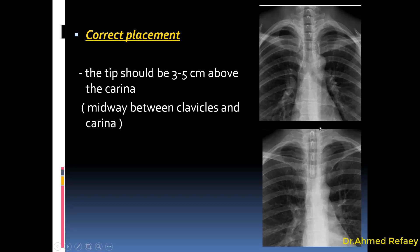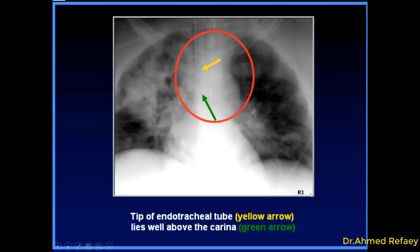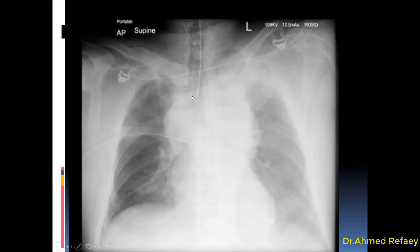As you see here, this is the tracheal airway, this is the right main bronchus, this is the left main bronchus, and this is the region of the carina. The tip of the endotracheal tube has to be three to five centimeters above the carina, or midway between the medial end of the clavicles and the carina. Here are additional examples showing normal placement of the endotracheal tube, with the tip three to five centimeters above the carina.